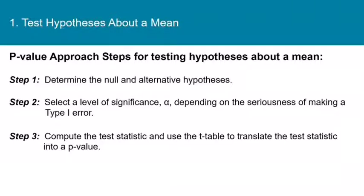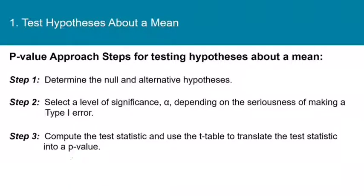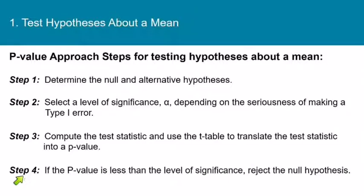Here's where the two approaches differ. Step three of the p-value approach is to compute the test statistic, just like we did for the classical approach, but then use the t-table to translate the test statistic into a p-value. The p-value is nothing more than the area beyond the test statistic. Then in step four, we compare: if the p-value is less than the level of significance, we reject the null hypothesis. If the p-value is more than the level of significance, we fail to reject the null hypothesis.